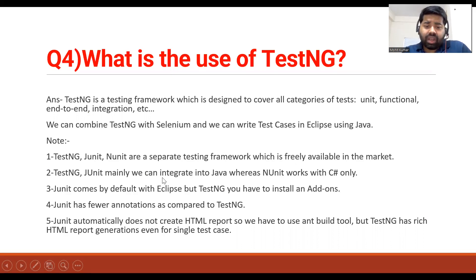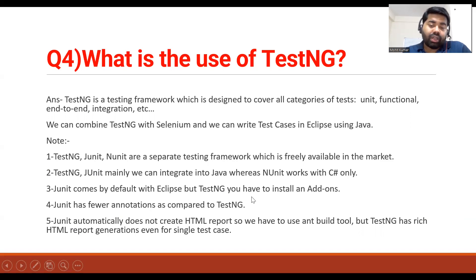TestNG and JUnit can mainly be integrated with Java, whereas NUnit works with C# only. JUnit comes by default with Eclipse, but TestNG requires installing an add-on. Comparing the two: JUnit has fewer annotations, but TestNG has a lot of annotations. JUnit does not automatically create an HTML report, whereas TestNG has built-in reporting features by default.